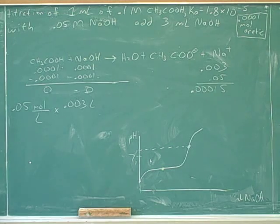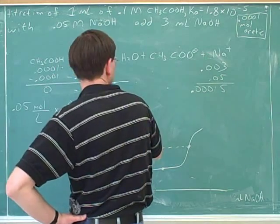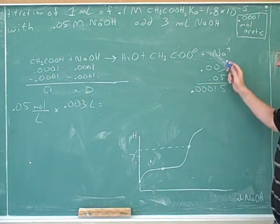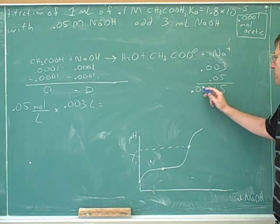So you get the concentration of the sodium hydroxide. And the number of moles of sodium hydroxide was this. So we should end up with five decimal places. One, two, three, four, five.